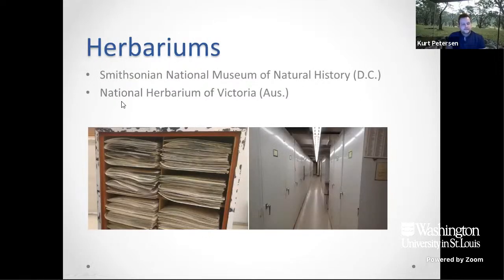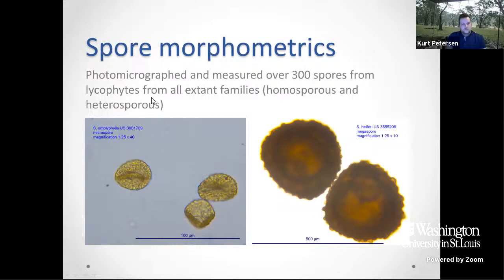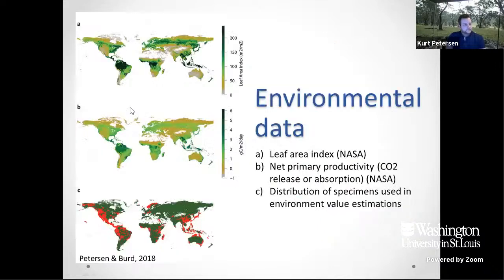The herbaria we collected spore trait data from were mostly the Smithsonian in DC, which has a particularly good collection of lycopods, and also the National Herbarium of Victoria. We gently removed spores from the sporangia on the sheets, placed them on slides of water, and photomicrographed all the different microspores and megaspores for as many specimens as we could. You get pretty good imagery from this — one scale bar is 500 microns and another is 100 microns, so some spores are around 20–30 microns. We also collected all of the homosporous specimens while we were at it.